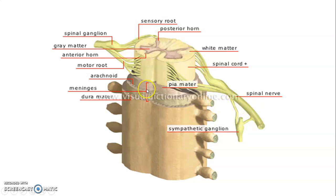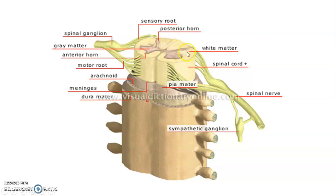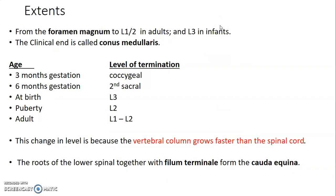The spinal cord is covered by the meninges: the outer dura mater, followed by arachnoid mater, then pia mater. The outer portion of the spinal cord has white matter, which is divided into anterior column, lateral column, and posterior columns.